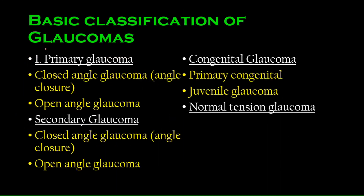Now let's classify the types of glaucoma. There are four main types: primary, secondary, congenital, and normal tension glaucoma. We'll have separate detailed lectures for each. Primary glaucoma occurs due to increased production or decreased drainage — a problem in either of the two aqueous humor systems.